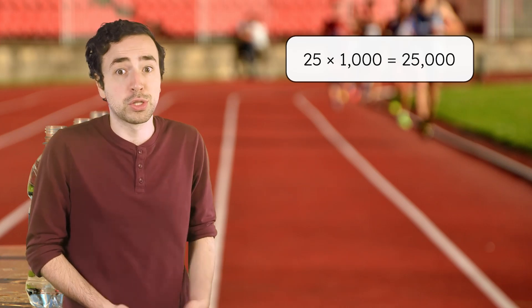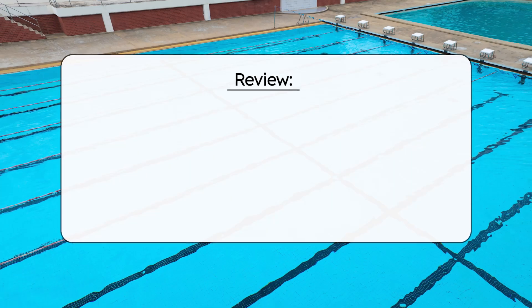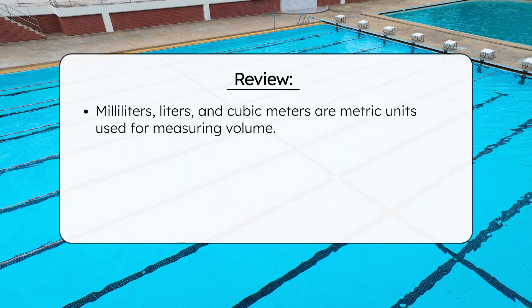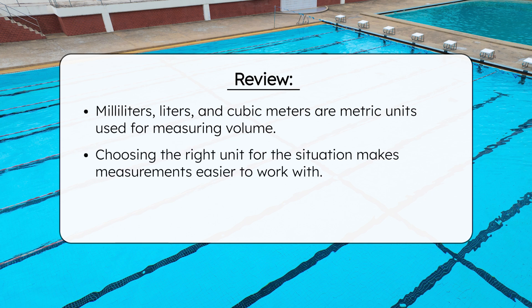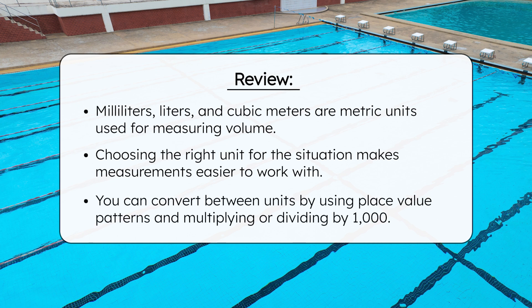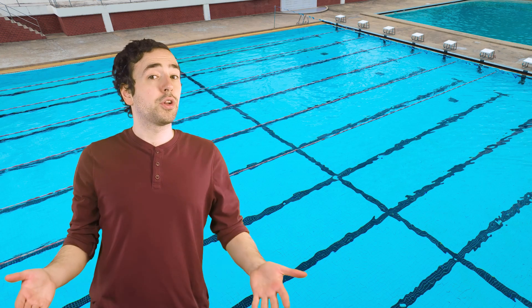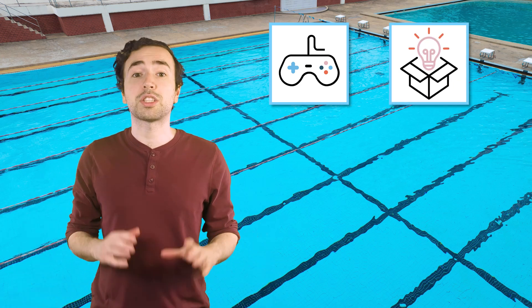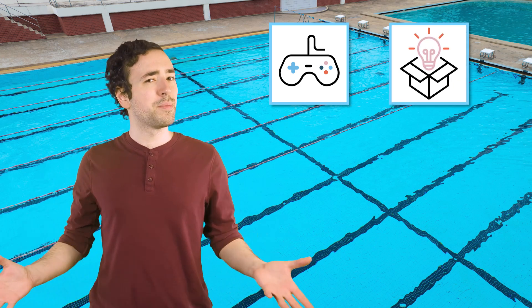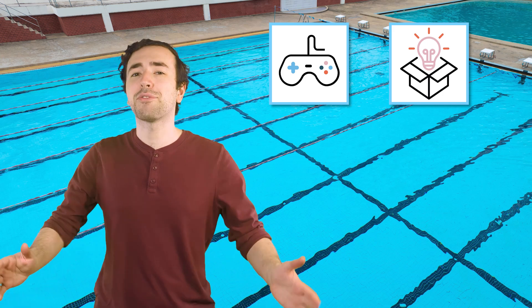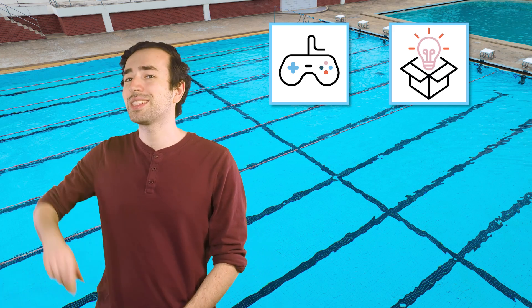So what have we learned today — besides the fact that I should probably double-check my water supply before race day? Now you know that milliliters, liters, and cubic meters are the main metric units for measuring volume, and that choosing the right unit makes measurements easier to work with. You've also practiced converting between metric volume units using place value patterns and multiplying or dividing by 1,000. Be sure to complete the practice questions and extension activities that go with this lesson. And remember, mathematicians — in math, as in life, every effort adds to your success. I'll see you next time.